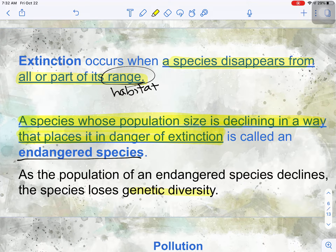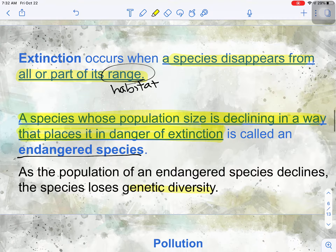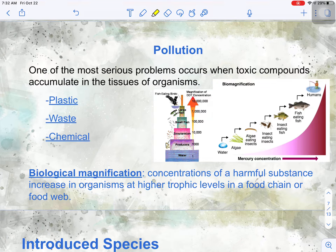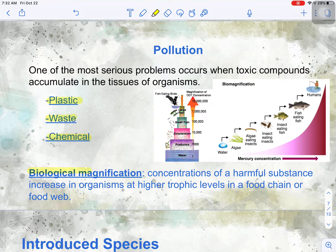Extinction can occur because we alter habitats, but it can also occur because of pollution. One of the most serious problems occurs when toxic compounds accumulate in the tissues of organisms. Plastic pollution is a huge problem facing our oceans and ocean animals — sea turtles are eating tiny bits of microplastic that accumulate inside their stomachs, causing cancer and death. Waste and chemical pollution can lead to something called biological magnification.